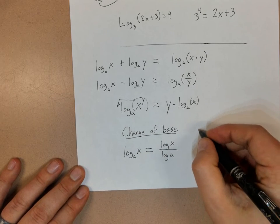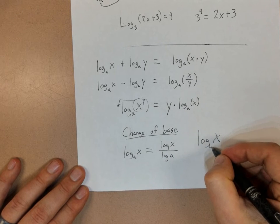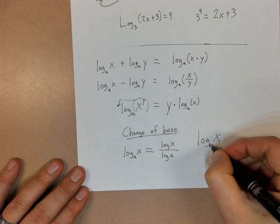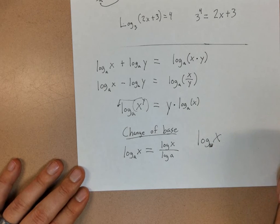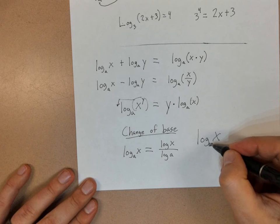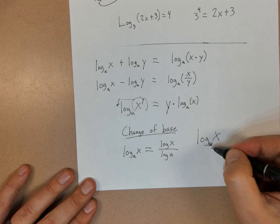One thing to note is that if I have log of x, whenever there's no number here, thinking about the number system that we count in, it would be base 10, because we have 10 digits, 0 through 9. So our counting system is base 10, so whenever there's not a number here, it will always be base 10.